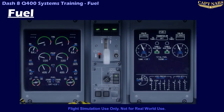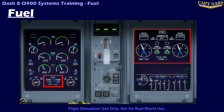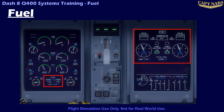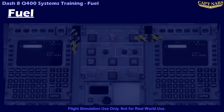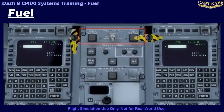In the flight deck, fuel quantity is displayed on the ED, and can also be displayed on the fuel page of the MFD. Additional controls for the fuel system are located on the fuel control panel, which is at the forward end of the pedestal.